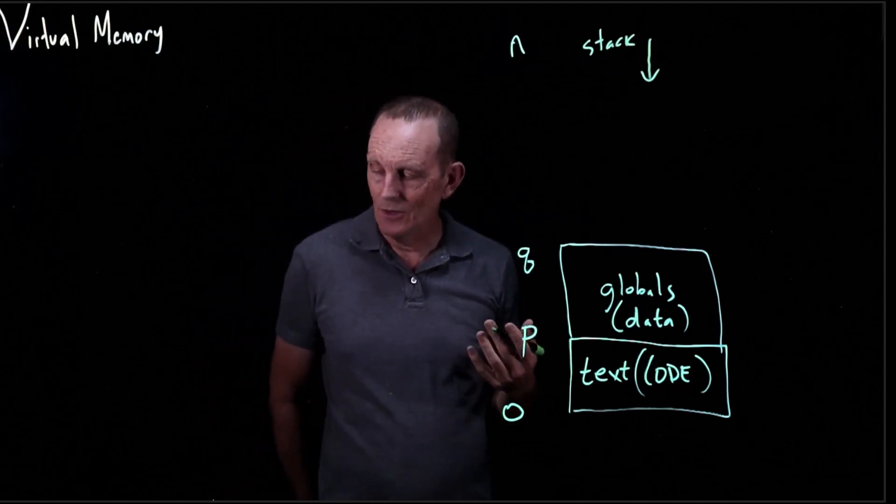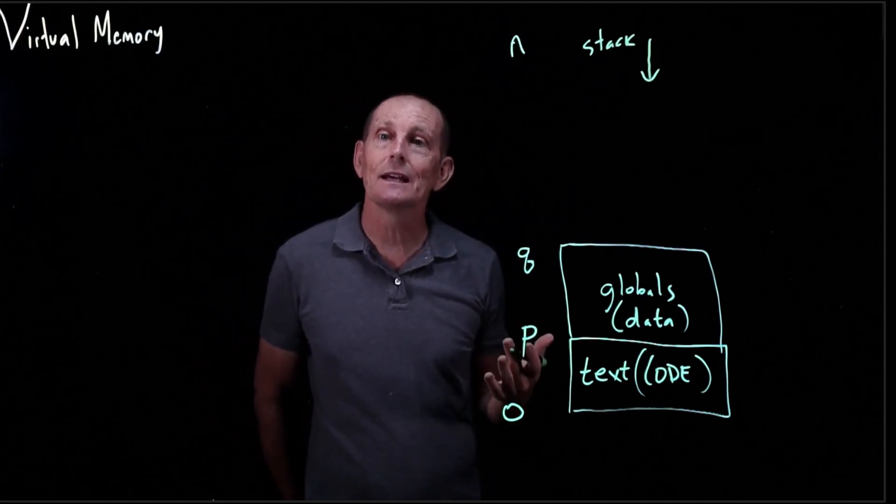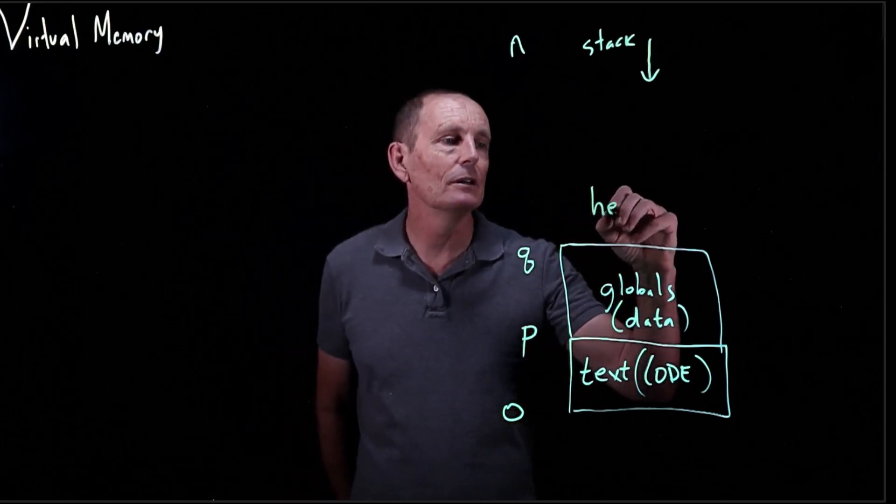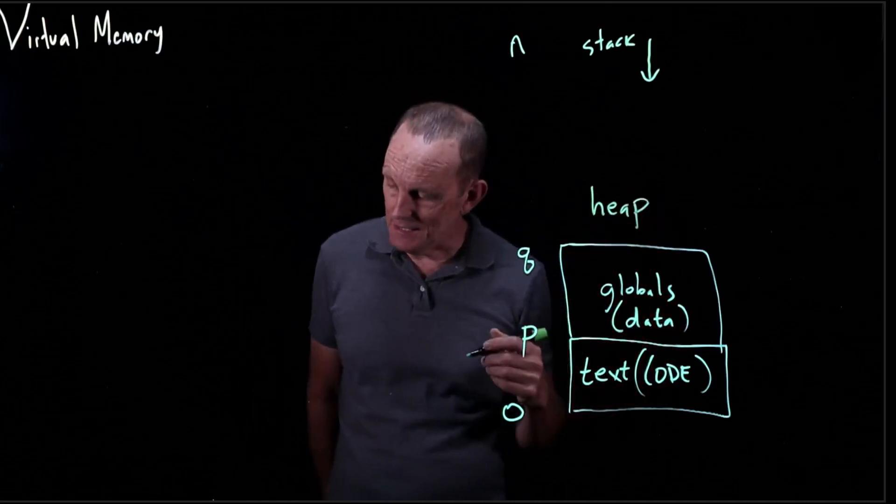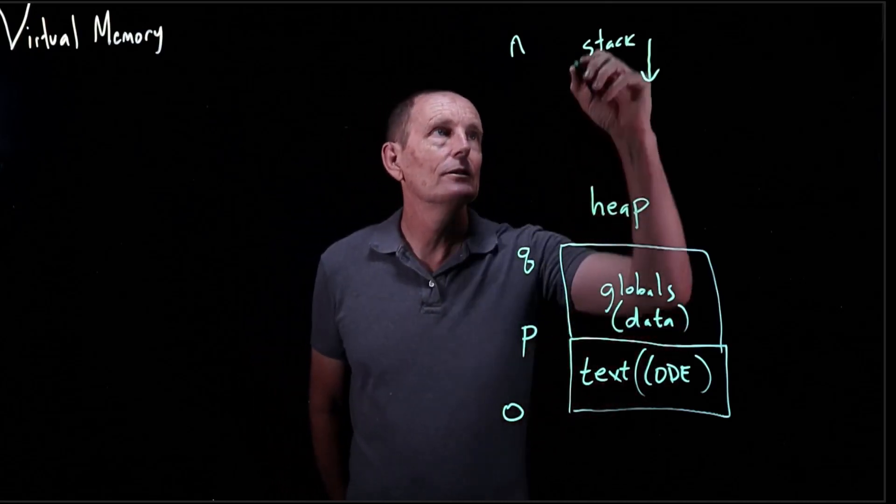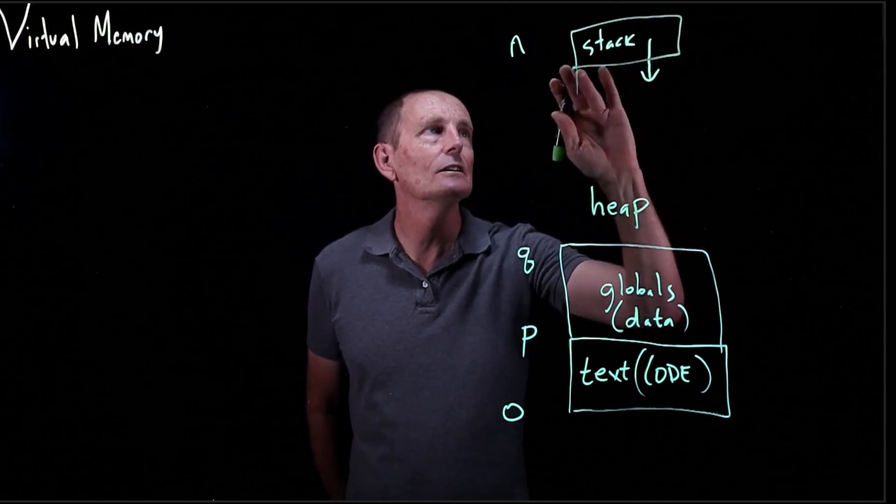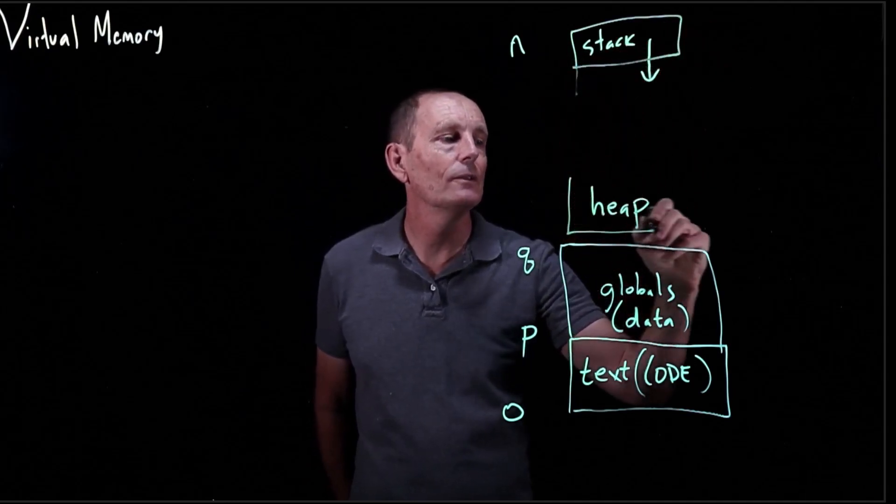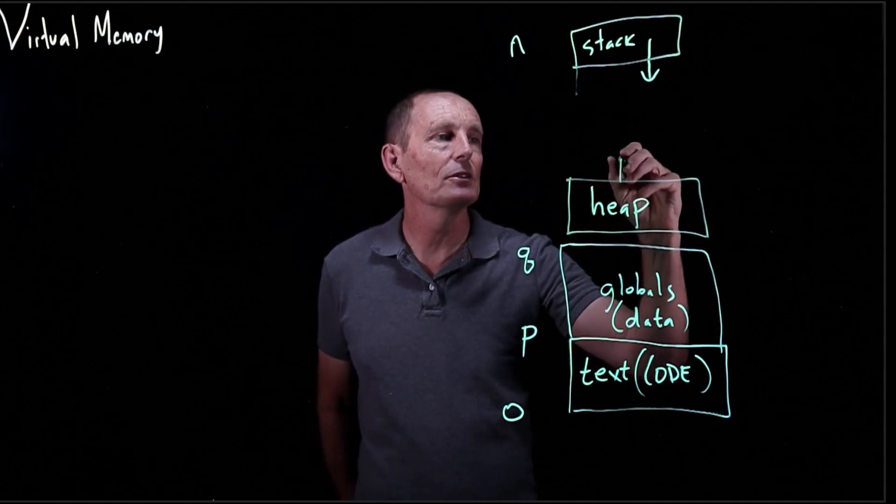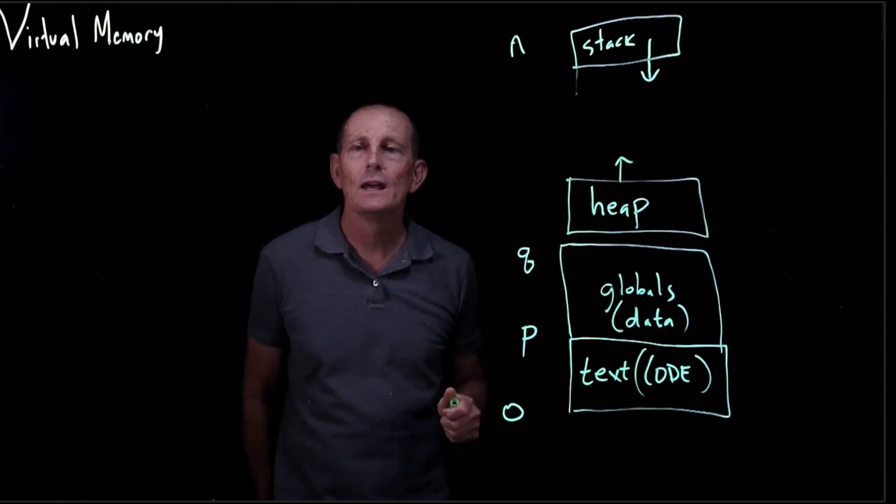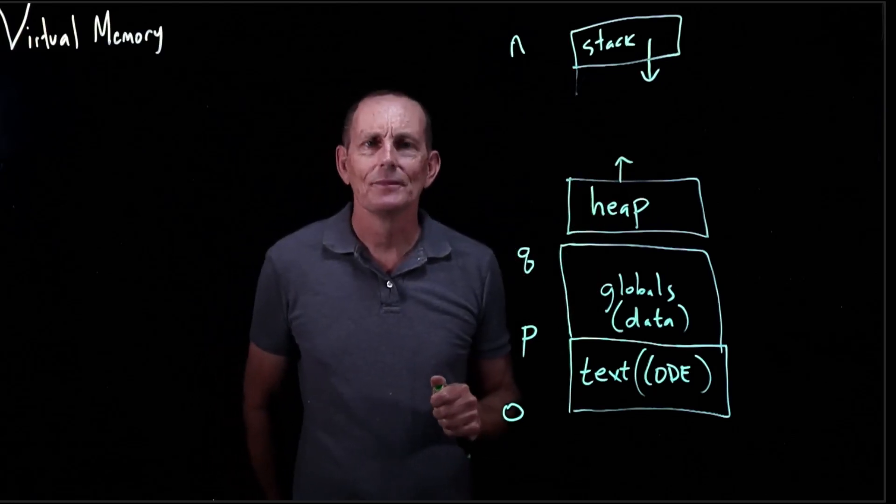And then we also have dynamically allocated memory. So anything that gets malloc, for example, that is part of the heap. And the heap is growing. So if we kind of look at the stack here, the heap is growing up. So we think of the heap as you malloc and malloc and malloc, it's using more and more memory. The kernel does not provide a system call for malloc.